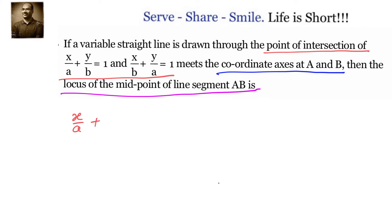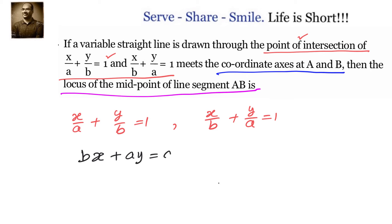Let us find the point of intersection of the two given lines x/a + y/b = 1 and x/b + y/a = 1. When we simplify, the first line becomes bx + ay = ab and the second line becomes ax + by = ab. We can solve by elimination, and a key observation is that the right-hand side is equal in both, so we can easily establish a relationship between x and y.